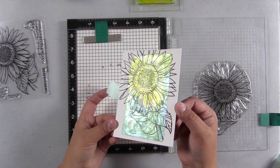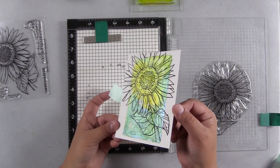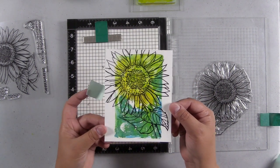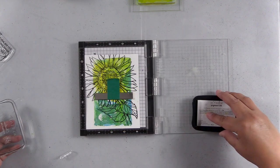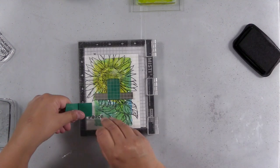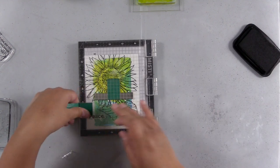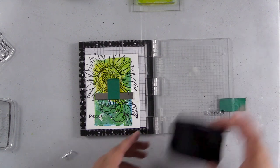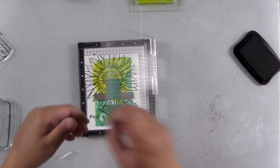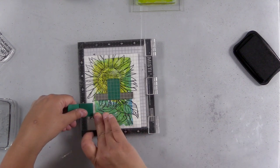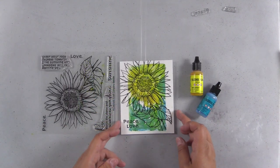Look at all of that shimmer though. It's just gorgeous. And like I said, the pictures just don't do this card justice at all. So for the sentiments, I'm going to pull two sentiments from the stamp set. And this set comes with five, just really thoughtful sentiments. I love the sentiments in this set, and I'm using peace and love and just keeping this card really simple because so much of the sunflower takes up the card.